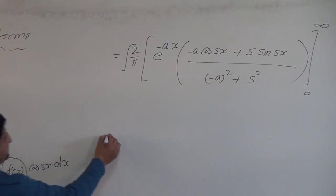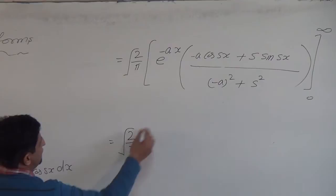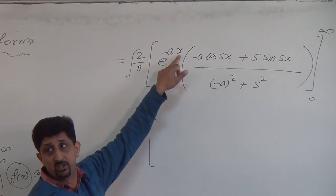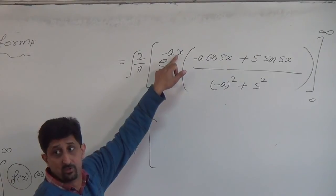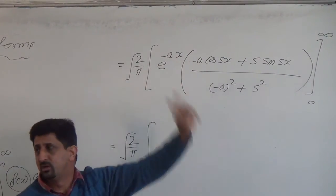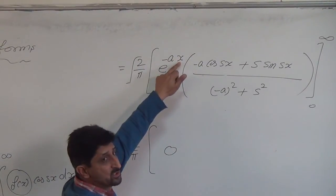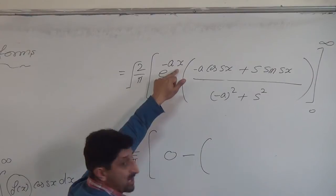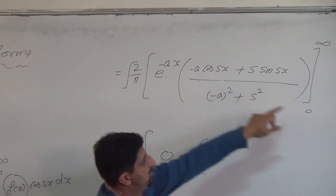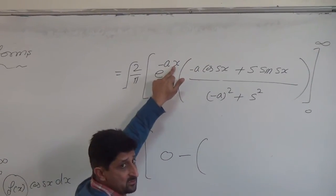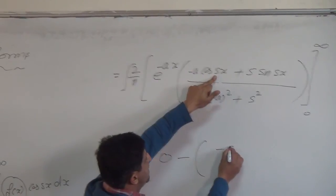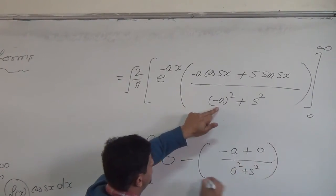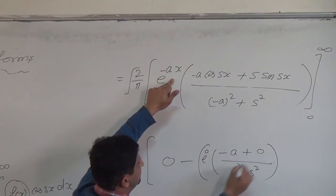How we substitute the limits. So 2 upon pi under root. When the limit applies, upper limit is infinity. So when x is approaching to infinity, e raised to the power minus infinity will approach to 0. Minus bracket start for lower limit. We put x equal to 0. So e raised to the power 0 is 1. cos(0) is 1. sin(0) is 0. a squared plus s squared. e raised to the power 0. Bracket closed.